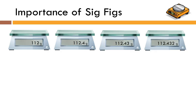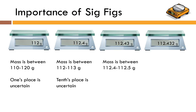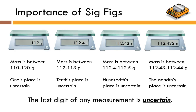Let's take a little more time to talk about instrument precision using those same four mass readings. On the first scale, the instrument knows the mass is between 110 and 120 grams and estimated the 2 — so the ones place is uncertain. On the next scale, the mass is between 112 and 113 grams; the instrument estimated the 0.4, so the tenths place is uncertain. Third scale: mass is between 112.4 and 112.5 grams, the hundredths place is uncertain. And on the last scale, the thousandths place was uncertain. The pattern is that in each measurement it is always the last digit that is uncertain — it has been guessed by the instrument automatically.